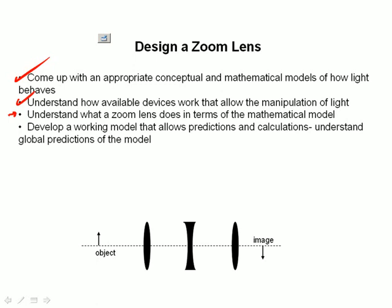And we're starting to get into this next point, which is to understand what a zoom lens does in terms of some kind of mathematical model of how light behaves. In fact, the optical system shown here, consisting of two positive focal length lenses and one negative focal length lens, is in fact a zoom lens.